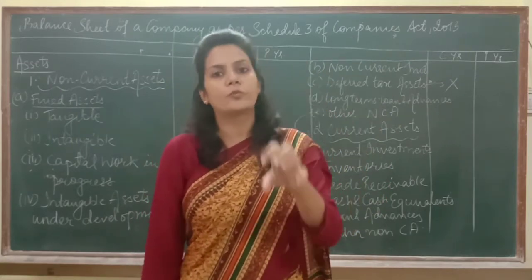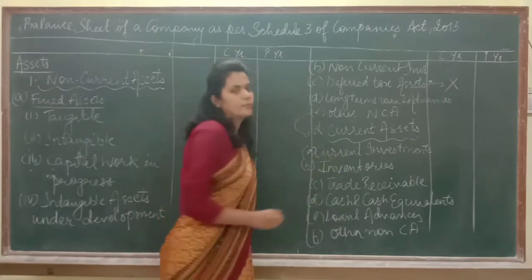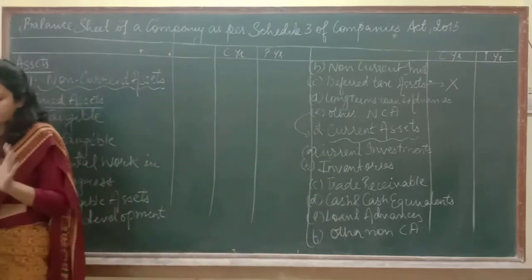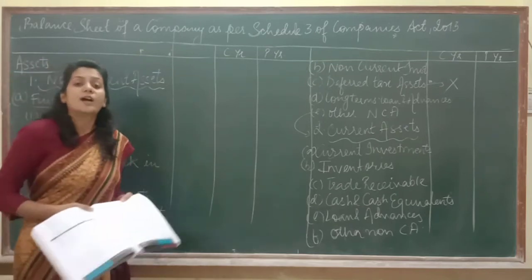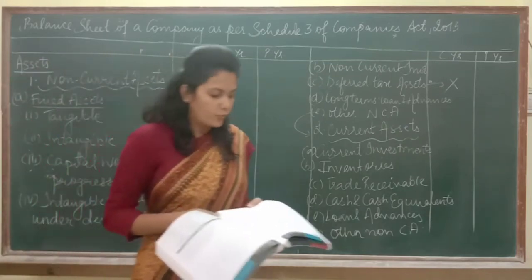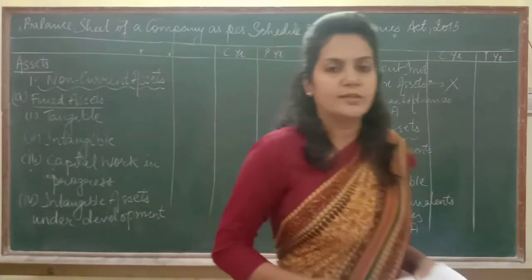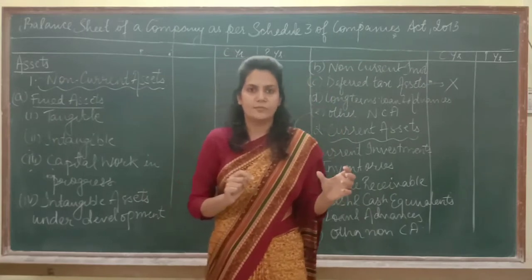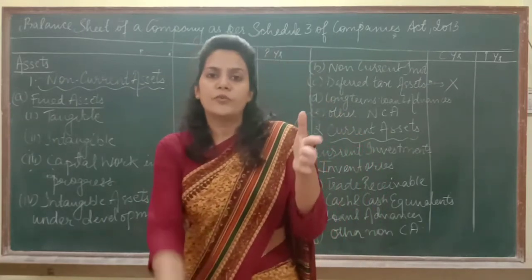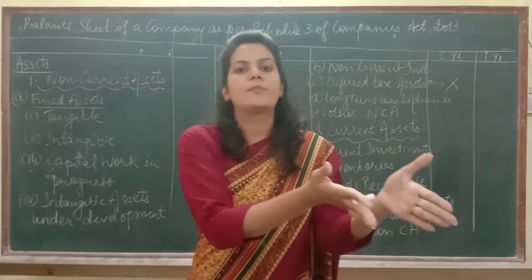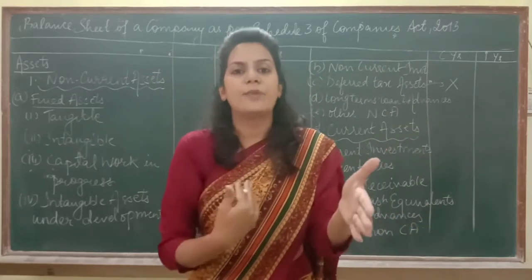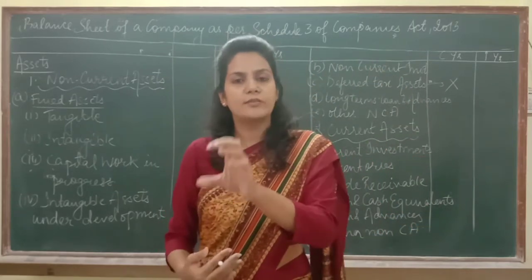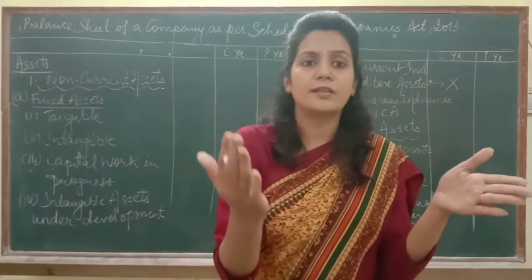On the asset side there are only two main heads: non-current assets and current assets. All others are sub-heads. You need to understand which item falls under which sub-head and main head. Non-current assets are assets we have not purchased for the purpose of resale — we keep these assets with us for a long period of time and want to earn revenue from them.